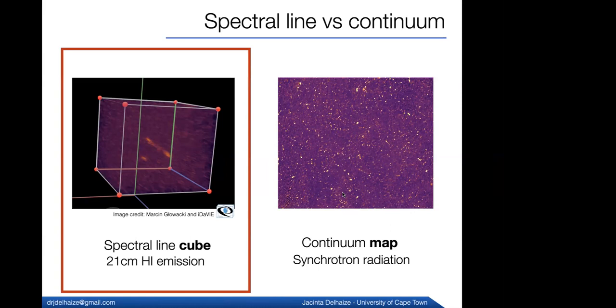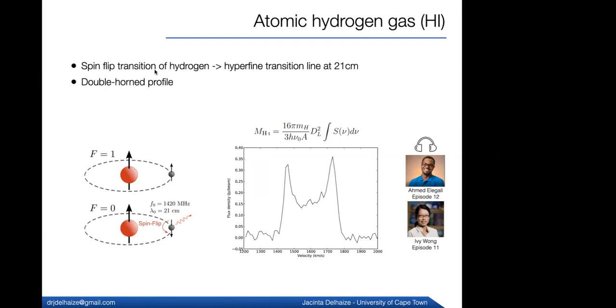So what emission mechanisms are releasing each of these things? For the H1, we have the spin flip transition of hydrogen. So hydrogen has a spin quantum parameter and the proton, the spin of the proton and the spin of the electron can either be aligned or misaligned. And this misaligned state is lower energy. So when the hydrogen atom spontaneously flips from the aligned to the misaligned state, it releases a photon of energy at 21 centimeters. And if we have a lot of this H1 mass rotating around a galaxy that's edge on to our line of sight, then we might end up with this nice double horn profile. We can integrate under this spectrum to get the H1 mass contained in that galaxy.